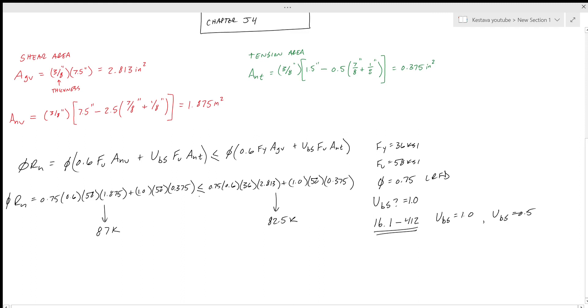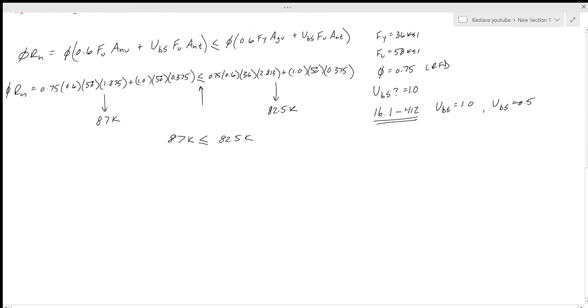So that means that phi*Rn equals 0.75 times 82.5 kips gets us 61.9 kips. That right there is the block shear strength of our tension member based on the connection condition that we have. That's it for this one.